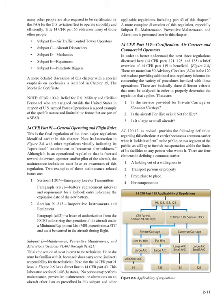Two examples of maintenance-related issues in 14 CFR Part 91 are: Section 91.207, Emergency Locator Transmitters — paragraph (e)(2), battery replacement interval and requirement for a logbook entry indicating the expiration date of the new battery; and Section 91.213, Inoperative Instruments and Equipment — paragraph (a)(2), a letter of authorization from the FSDO authorizing operation of the aircraft under a Minimum Equipment List (MEL) constitutes a SFAR and must be carried in the aircraft during flight. Subpart E, Maintenance, Preventive Maintenance, and Alterations, Sections 91.401–91.421, is the section of most interest to the technician. Section 91.403(b) states: 'No person may perform maintenance, preventive maintenance, or alterations on an aircraft other than as prescribed in this subpart and other applicable regulations, including Part 43 of this chapter.'